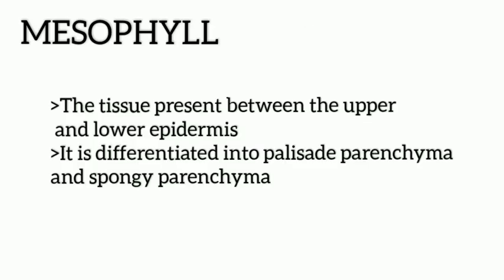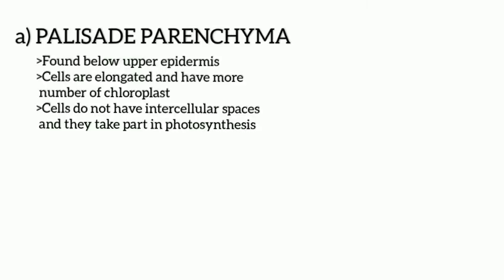Next we have mesophyll. The tissue present between the upper and lower epidermis is the mesophyll. It is differentiated into palisade parenchyma and spongy parenchyma. Palisade parenchyma is found below the upper epidermis. The cells are elongated, have more number of chloroplasts, do not have intercellular spaces, and they take part in photosynthesis.